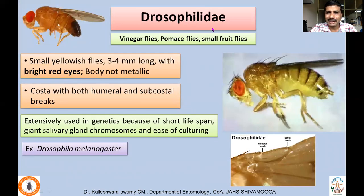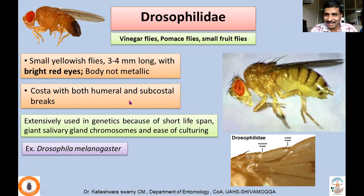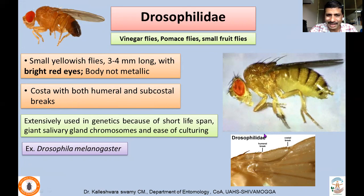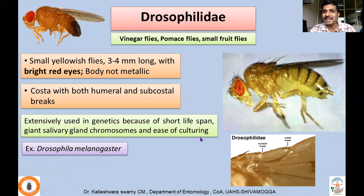Next, family Drosophilidae — vinegar flies, pomace flies, or small fruit flies. They are small yellowish flies, 2–4 mm long, with bright red eyes. The costa has two breaks — one at the humeral region and another subcostal. They are extensively used in genetics due to their short lifespan, giant salivary gland chromosomes, and ease of culturing. Millions can be mass-reared in laboratories worldwide. Example: Drosophila melanogaster.